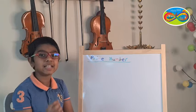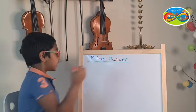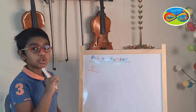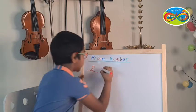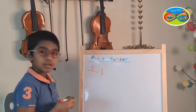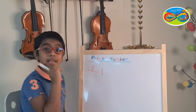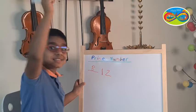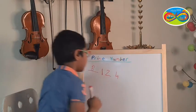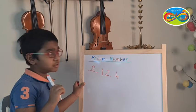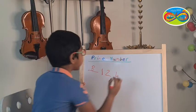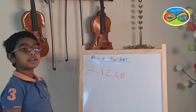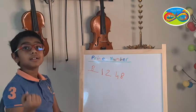For example, let's take the number 8. So I will write down 8. So let's see the factors. 1, yes it does. Then 2, yes. 3, no. 4, yes. 5, no. 6, no. 7, no. 8, yes. So 1, 2, 4 and 8 are factors of 8.